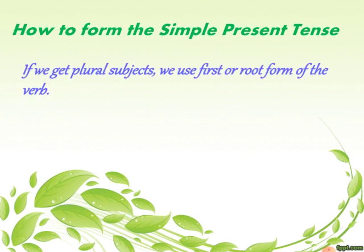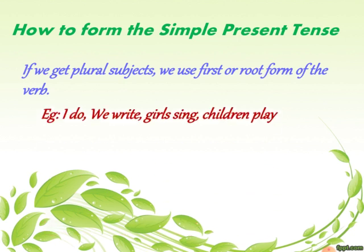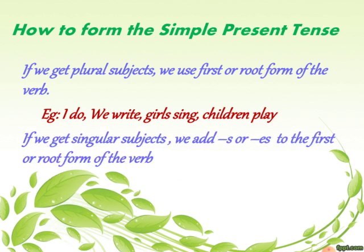Now, how to form the simple present tense: if we get a plural subject, we use the first or root form of the verb. For example: I do, we write, girls sing, children play. When you get many subjects, we use the root form of the verb — simple: sing, play — no s, no es, no ed, no ing.